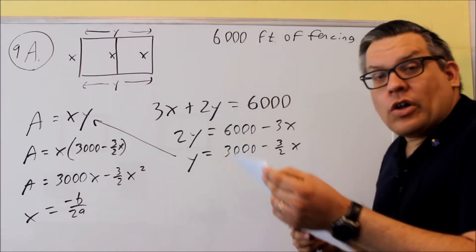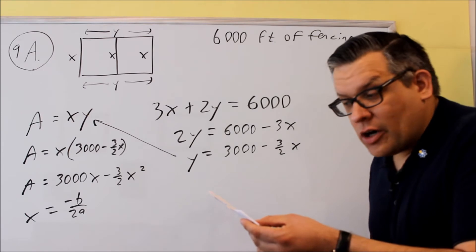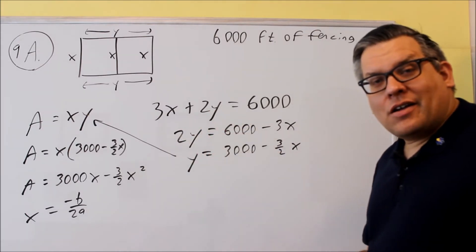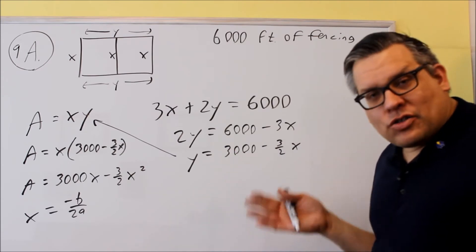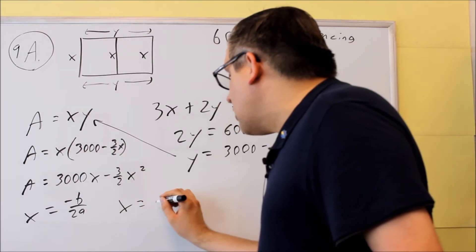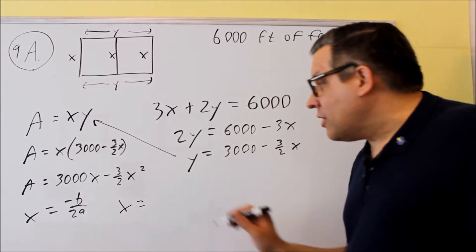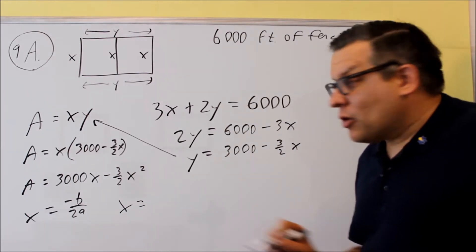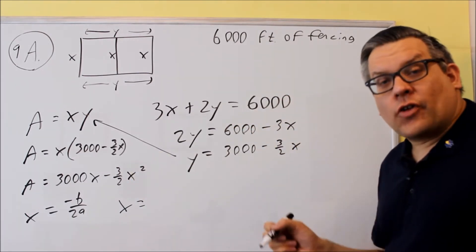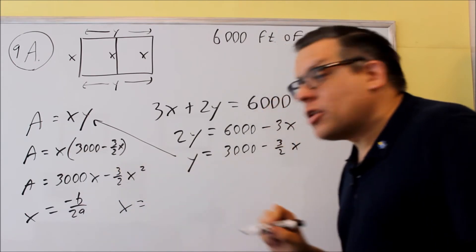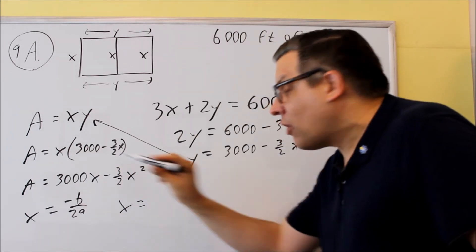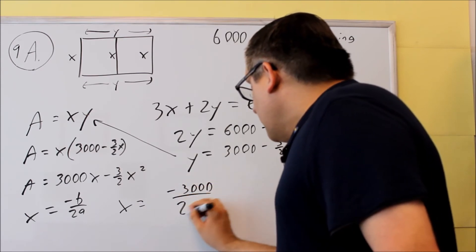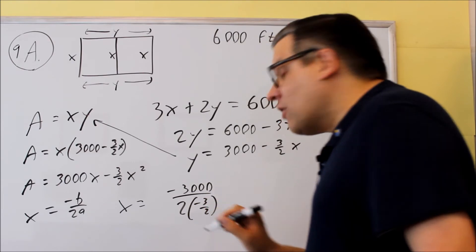So what is this asking for? It's asking for what dimensions produce the maximum enclosed area and what is the maximum area. So they're asking for both. We're going to have to find x and y and multiply those together to get the area. We're going to do x equals negative b over 2a. The b is the number in front of the non-squared variable. The a is always in front of the squared variable. Make sure you don't get those confused. a is always in front of the x squared.